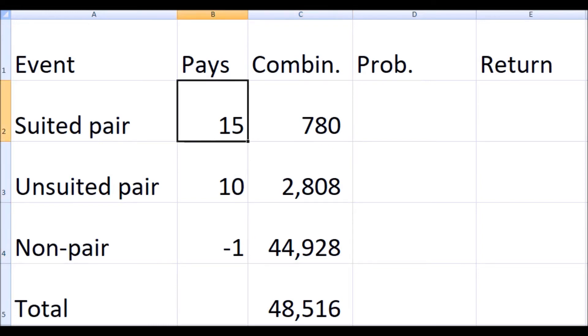The most common pay table that you see with six decks is a suited pair pays 15 to 1 and an unsuited pair pays 10 to 1.